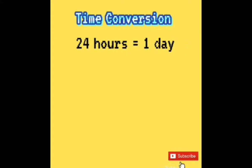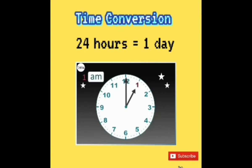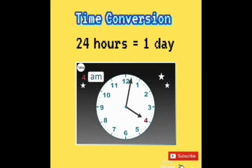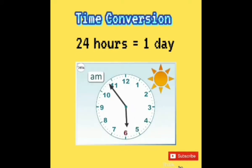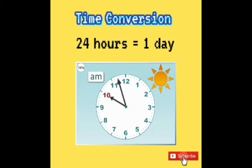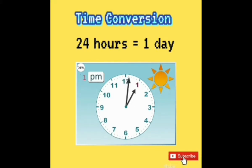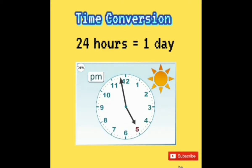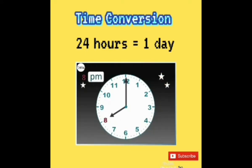24 hours is equal to 1 day. There are 12 hours during daytime — we use a.m. There are another 12 hours during nighttime — we use p.m.